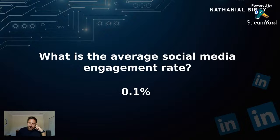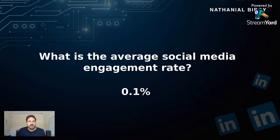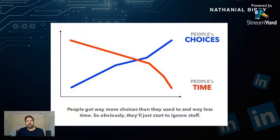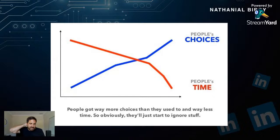The average social media engagement rate is 0.1%. Most people on social media are terrible at this, so don't beat yourself up if your conversion rates aren't huge. If you're better than 0.1%, you're doing better than the pack. What's happening in the world now is people have less time and way more choices, so they're going to start to ignore stuff. Posting regularly becomes important — chatting to people in the DMs, starting conversations. It's not enough just to post once here and there.